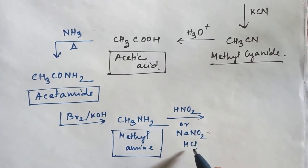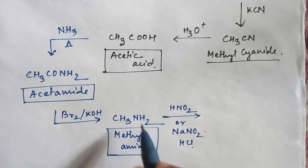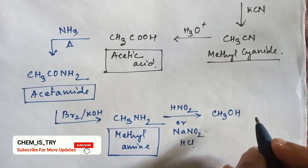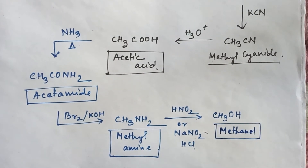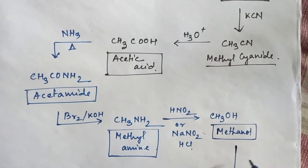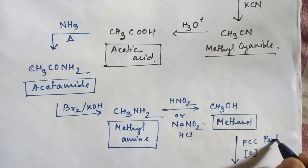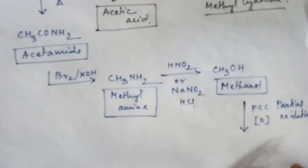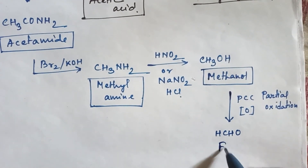So you can write either nitrous acid or NaNO2 + HCl. The amine group will then convert into alcohol — CH3OH, which is methanol. Now in methanol, if you do partial oxidation by using PCC, then the alcohol will convert into an aldehyde — here the aldehyde is formaldehyde.